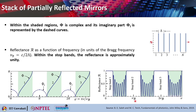If you plot the reflectance capital R as a function of frequency in terms of the Bragg frequency nu_B — from 0 to 2·nu_B and beyond — at every integral multiple of nu_B you see a reflection stop band. The first one appears at nu_B, then at 2·nu_B, 3·nu_B, and so on. At the stop bands, the reflectance is almost unity — whatever is incident is basically being reflected.